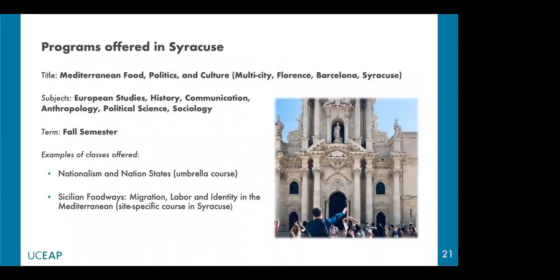The other Sicily program — and actually a multi-city program, my personal favorite — is called Mediterranean Politics, Food and Culture. It runs through three different cities: Florence, Barcelona, and Siracusa. Students will spend five weeks in each location taking an umbrella course across all three cities, plus a site-specific class in Florence and in Barcelona. This program covers many subjects and is open to all UC majors.